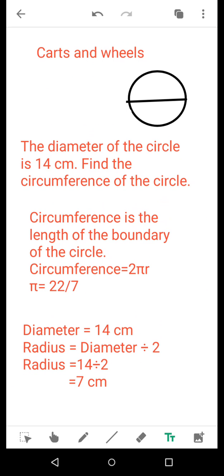Now students, as we have already learned about diameter and radius, today we will learn about circumference. Circumference is the length of the boundary of the circle. In simple words, you can call circumference the perimeter of the circle.